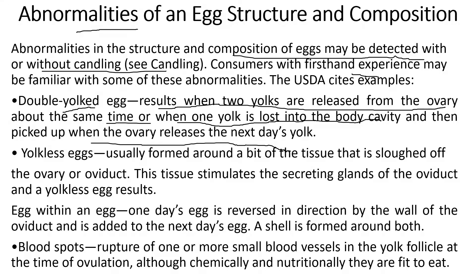In a double yolk egg, two yolks appear in a single egg because one yolk remains in the body cavity of the hen and is expelled alongside the next ovary release. Next is the yolkless egg, which does not contain even a single yolk. It is usually formed around a bit of tissue that has broken off from the ovary or oviduct. This tissue stimulates the secretory glands of the oviduct, resulting in a yolkless egg — a very rare condition caused by damage to the oviduct or ovary tissue.